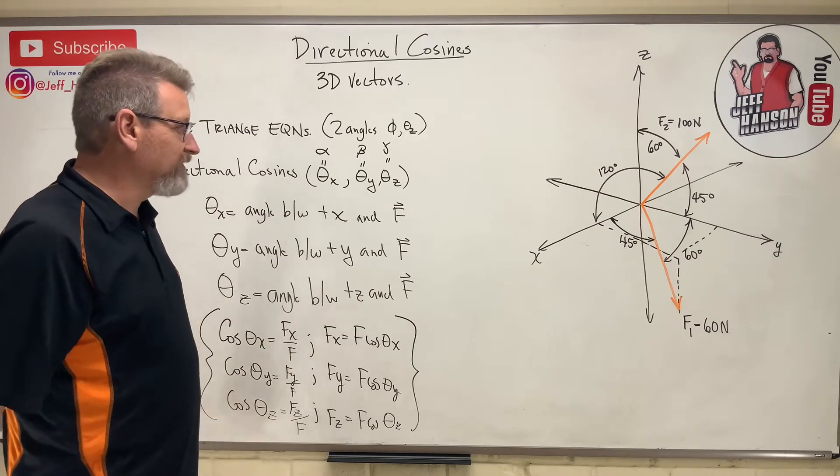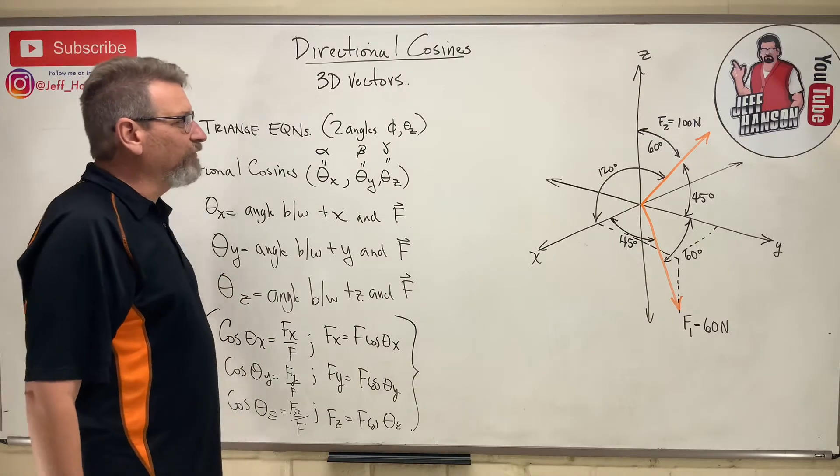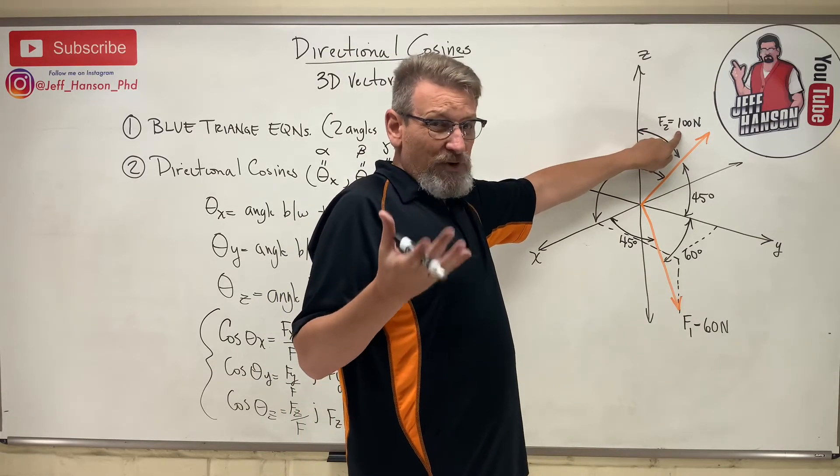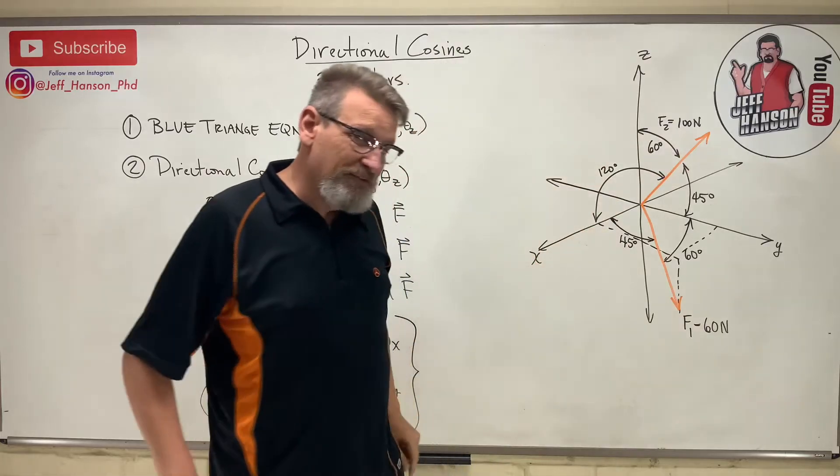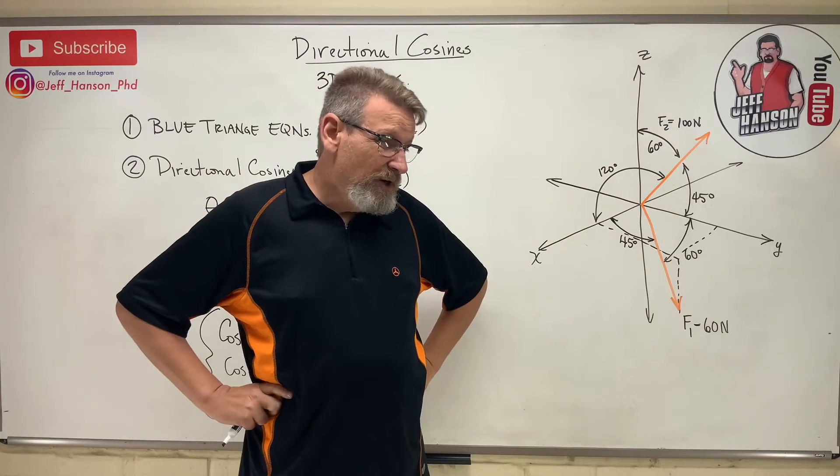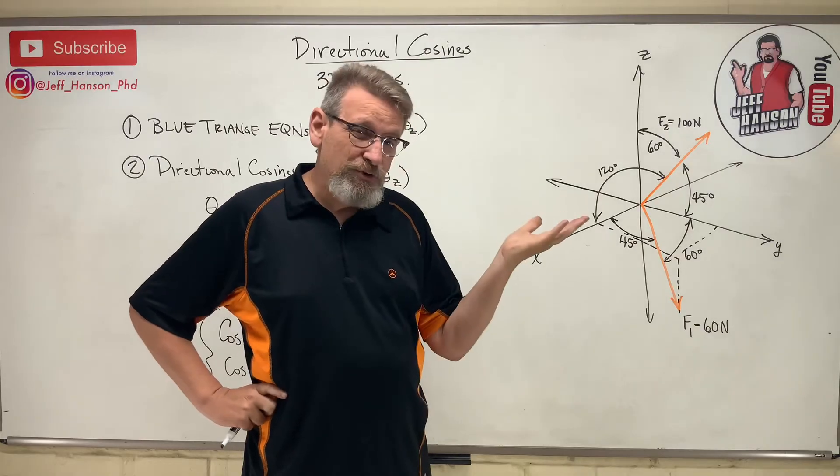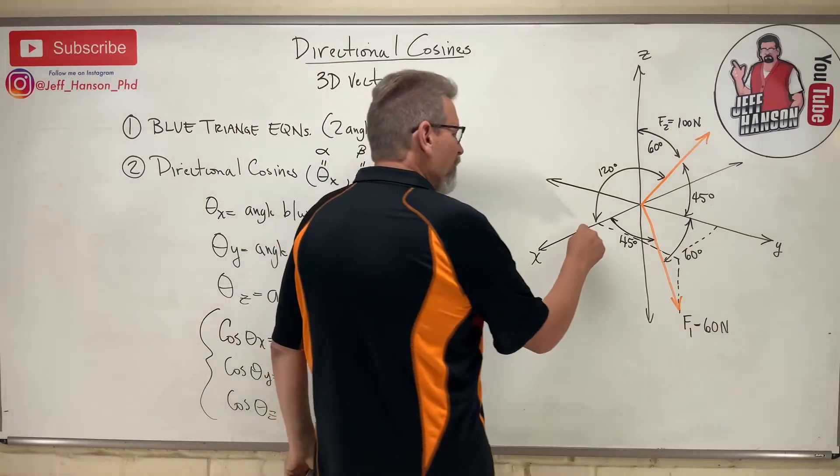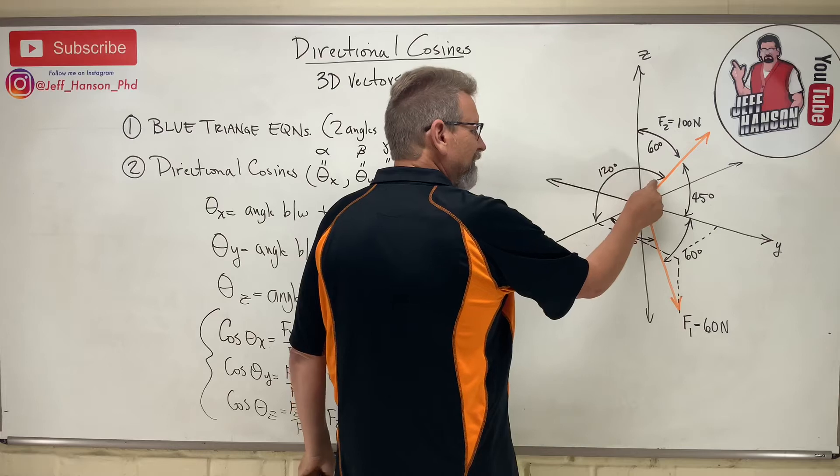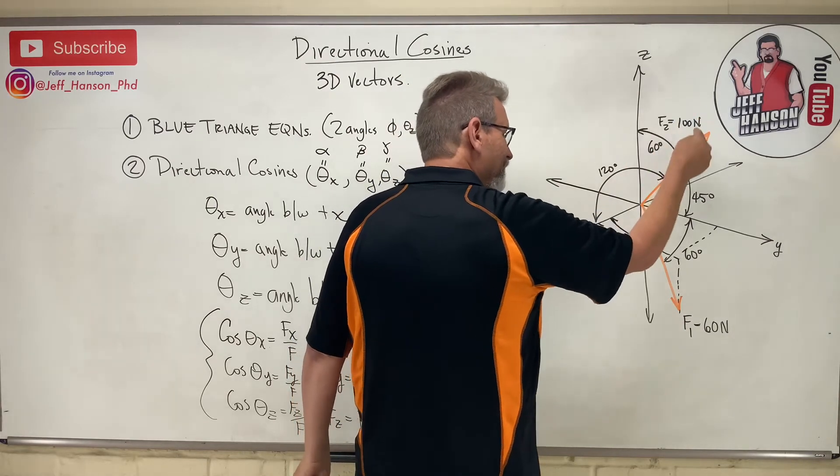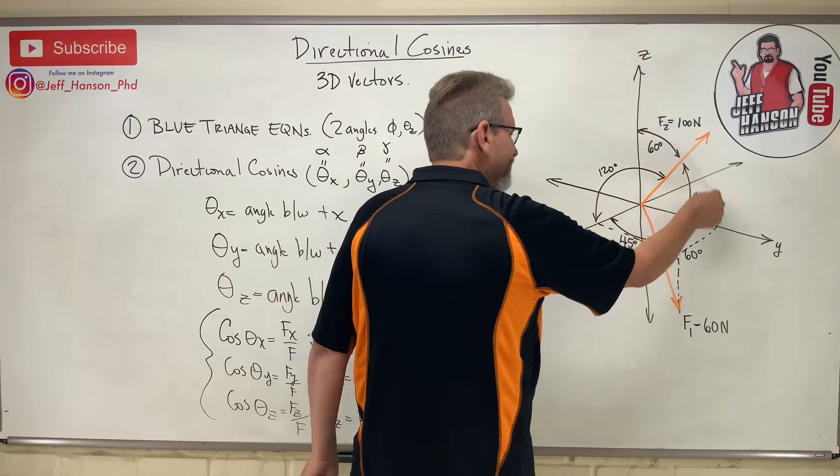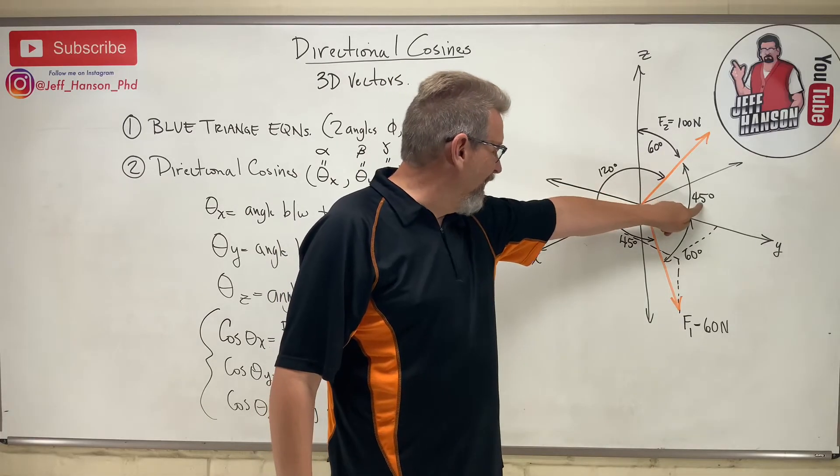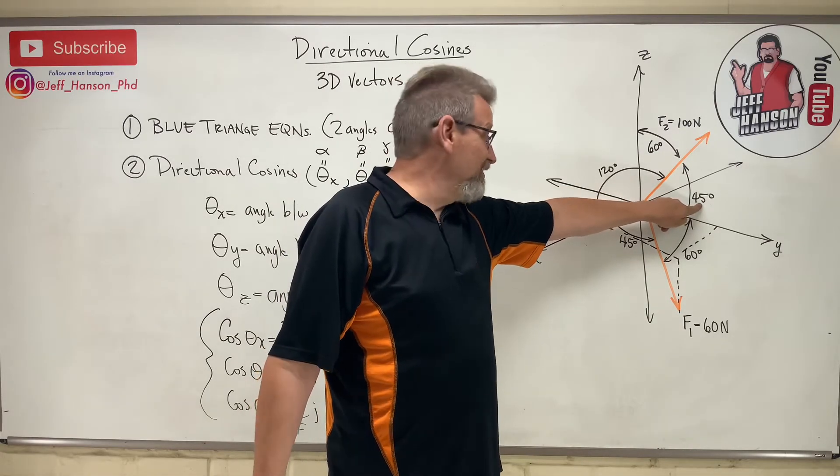Now let me show you a few tricks here. Let's look at vector f2 first, this guy up here. Because when you get a problem, the very first thing you need to do is look at that problem and say, is that a blue triangle question or is that a directional cosine question? How do you know it's a directional cosine question?